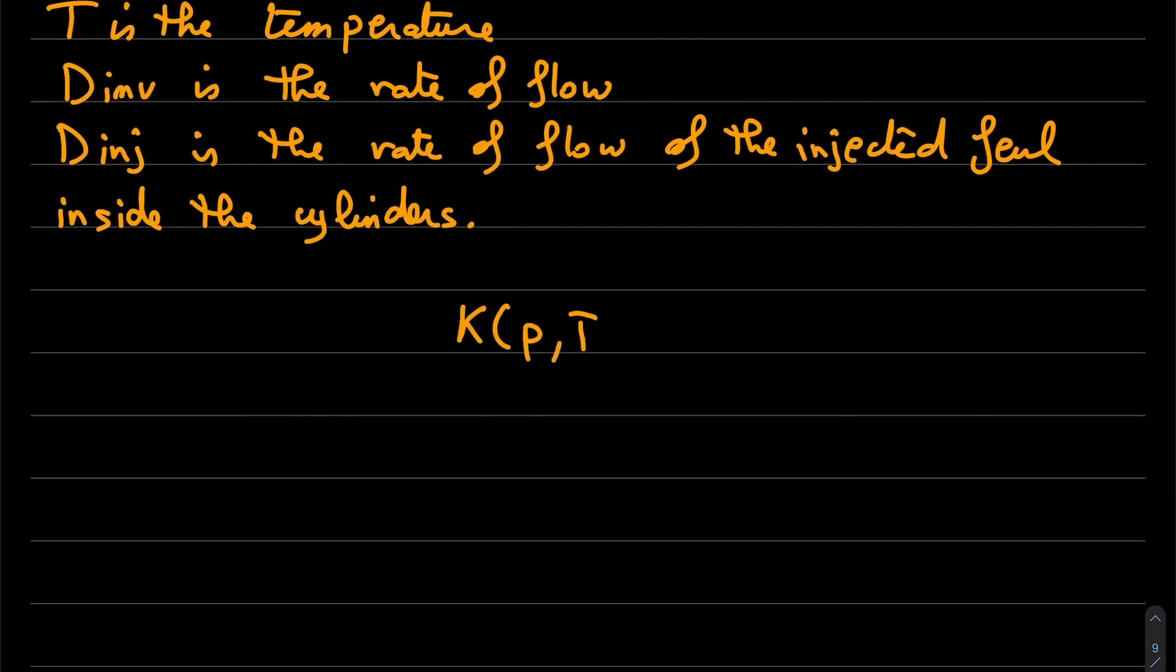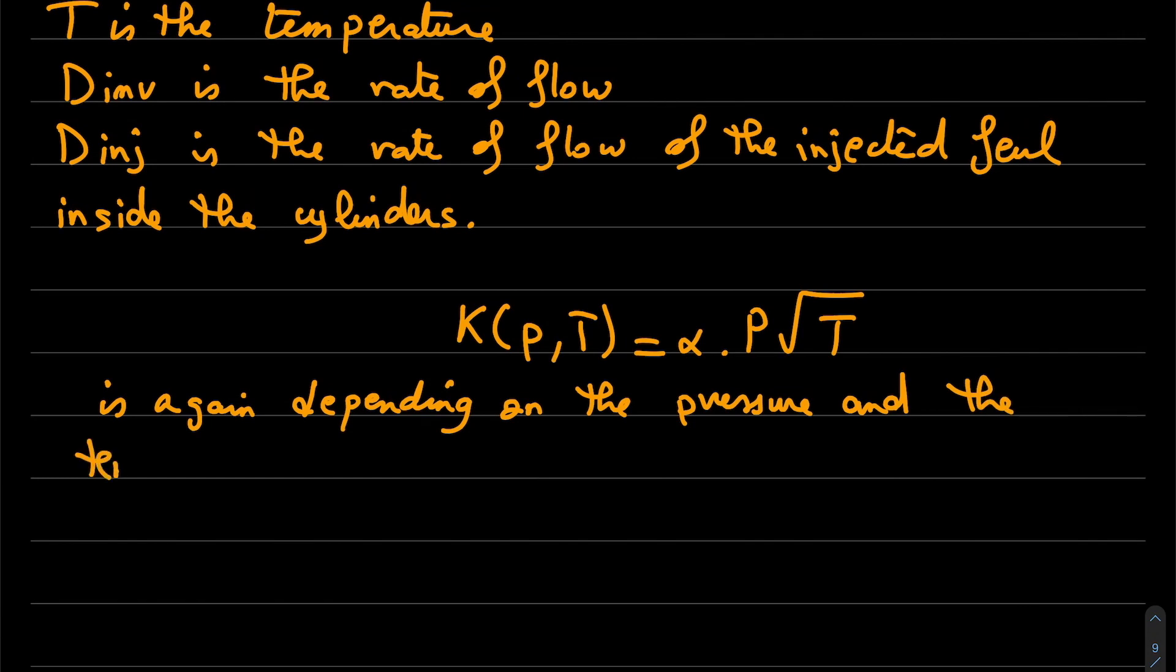K(P,T) is a gain depending on alpha, which we will give later, and P and the square root of T, where P is the pressure and T is the temperature.